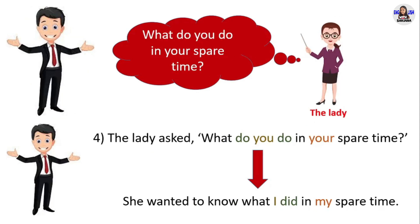Next example: 'What do you do in your spare time?' The lady asked me 'What do you do in your spare time?' in direct speech. In reported speech, she wanted to know what I did in my spare time. 'Do' in present simple changes into 'did' in past simple. Pronoun 'you' changes into pronoun 'I.' 'Your' as the possessive adjective changes into 'my.'